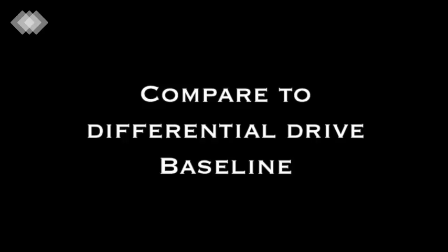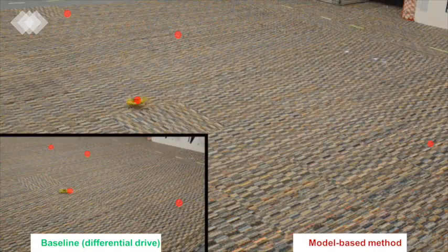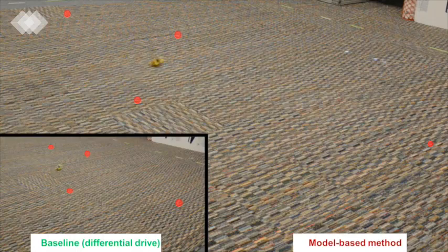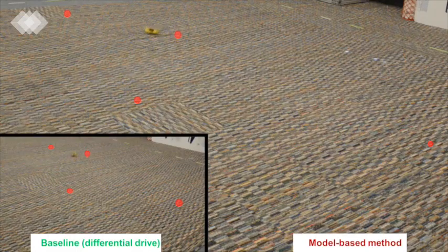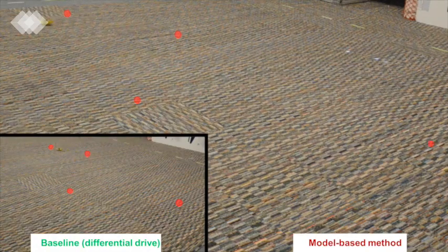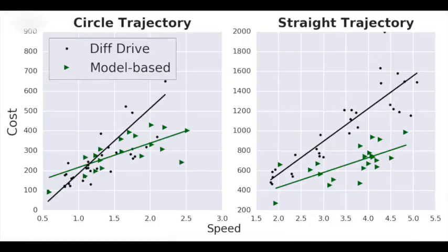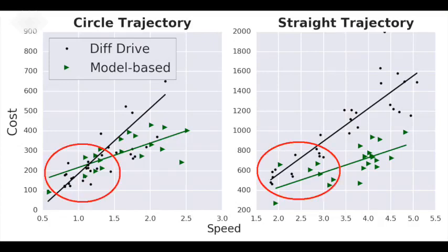We compare our model-based method to a baseline method of differential drive steering. Here, we show plots of cost versus speed for two different types of trajectories. Our experiments show that the baseline is comparable to our model-based method at low speeds.